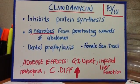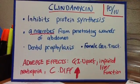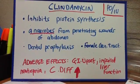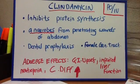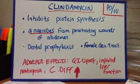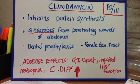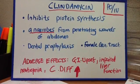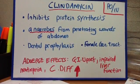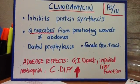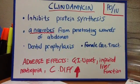So we're going to talk about clindamycin. This is the last one of the series. Clindamycin inhibits protein synthesis and it works very well with anaerobes, for example from penetrating wounds of the abdomen. Clindamycin is also used for dental prophylaxis and in the female genital tract. Intravaginal clindamycin is used to reduce preterm birth in women with abnormal genital tract flora.